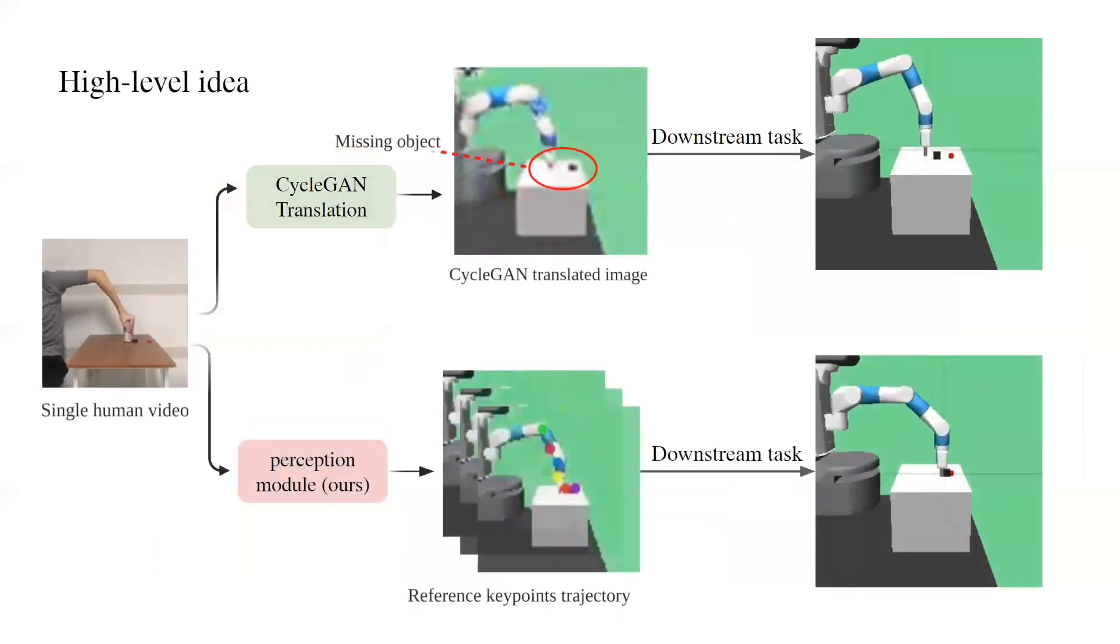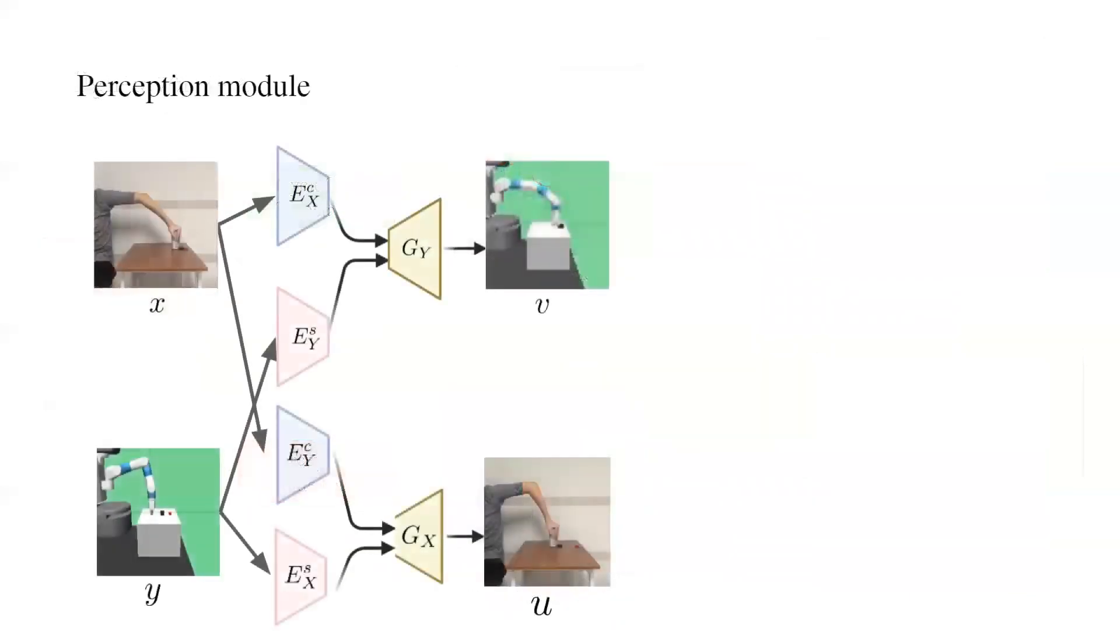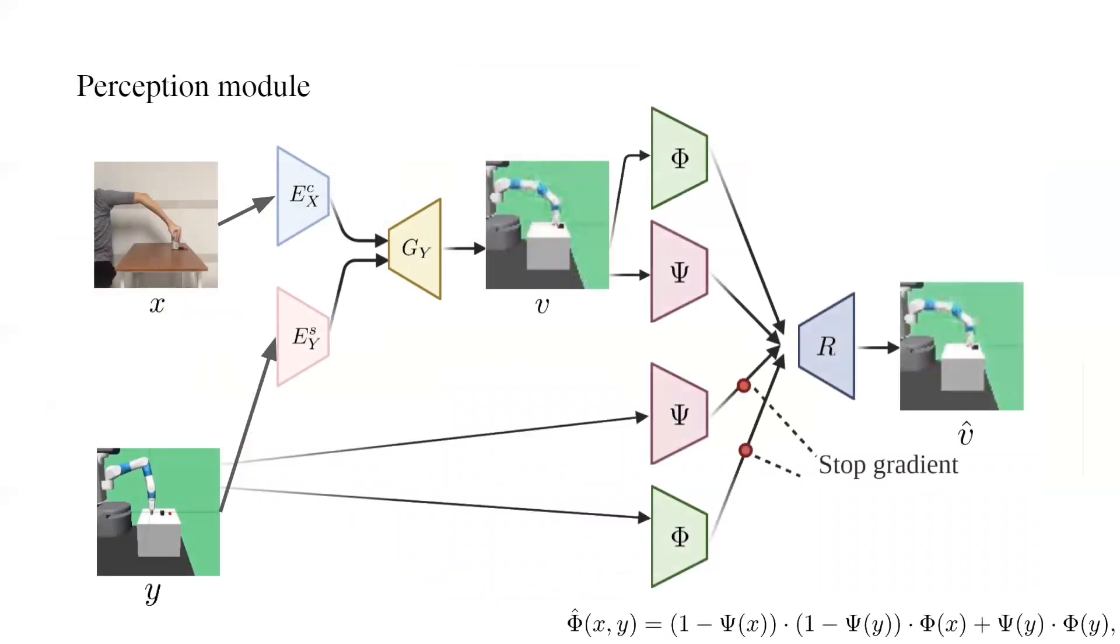To overcome this challenge, we develop a non-supervised perception module. Our perception module composes an image-to-image translation model and a keypoint detection model. The translation model translates images from human domain to the robot domain using a style-content disentanglement method. Then, the keypoint detection model reconstructs the translated robot frame by transporting spatial features at the detected keypoint locations.